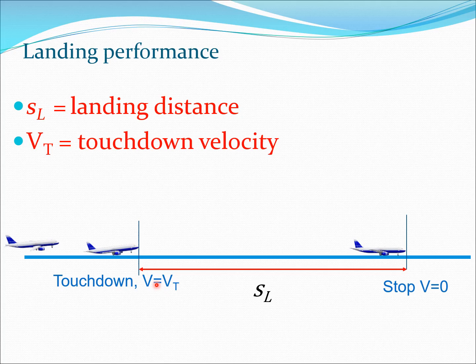After touchdown, the aircraft continues to taxi down the runway until it comes to a stop where velocity equals zero. The length of travel from v_T to the stopping point is the landing distance, denoted s_L. We are going to calculate this distance, which also helps determine the required runway length at an airport.